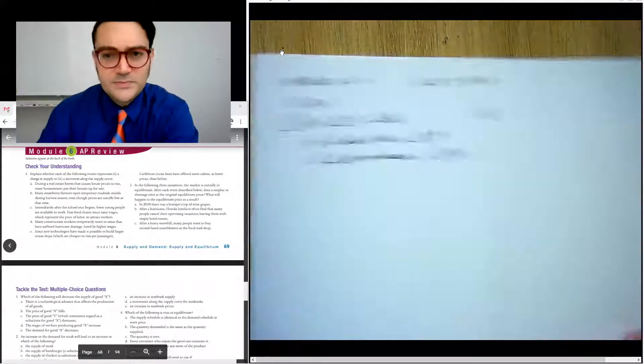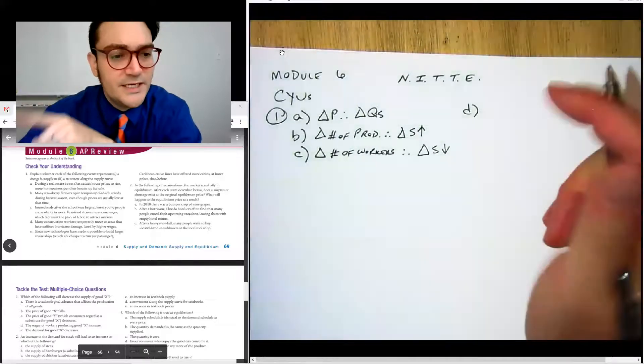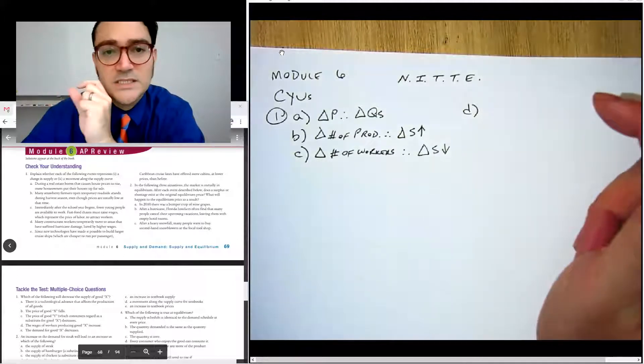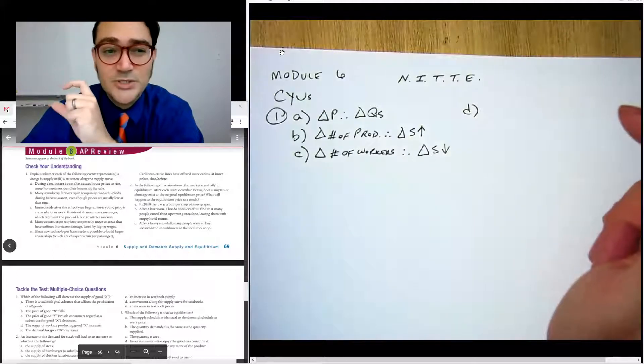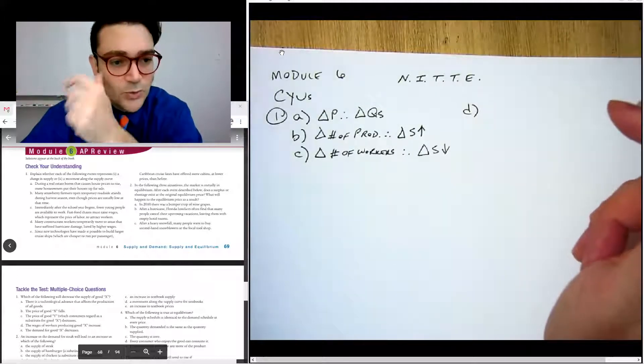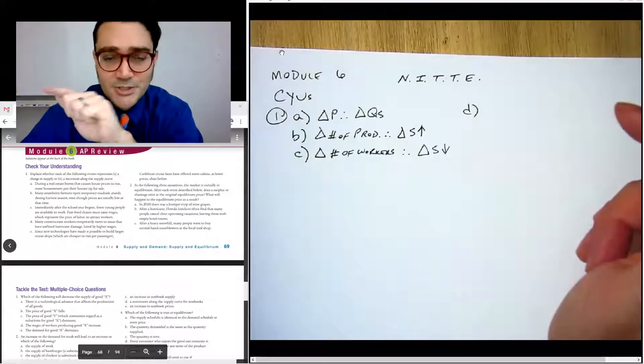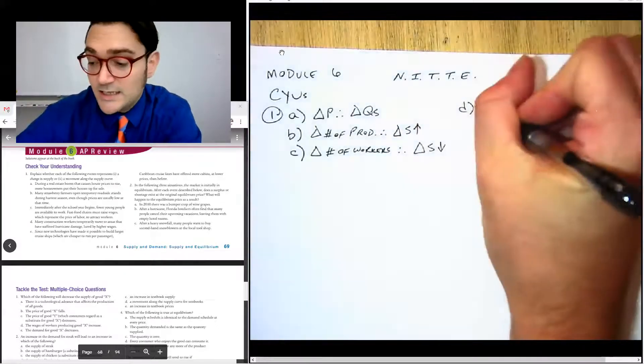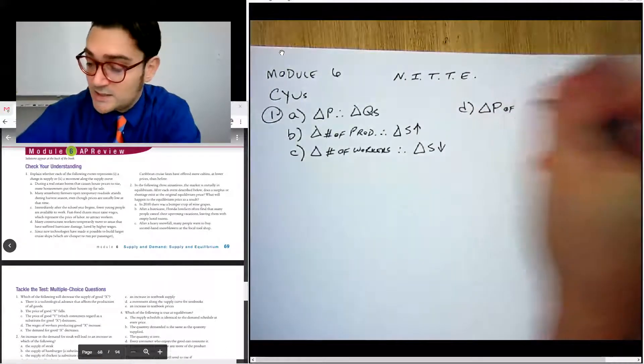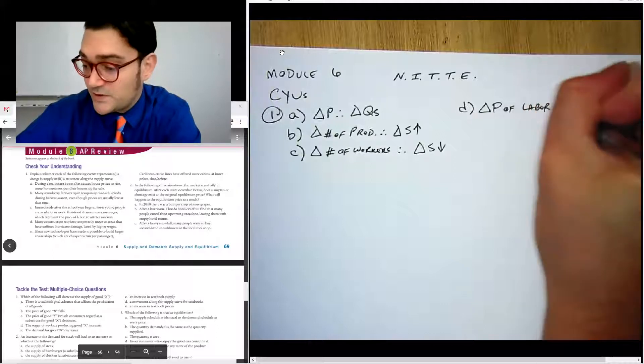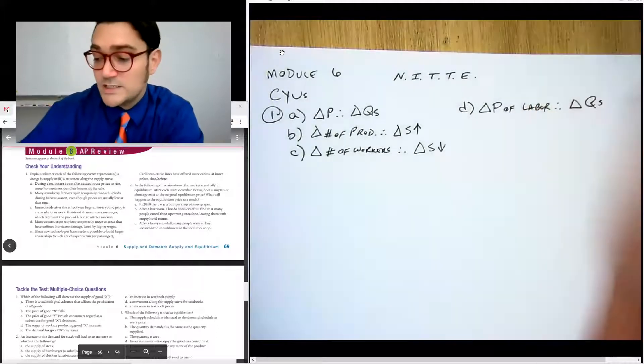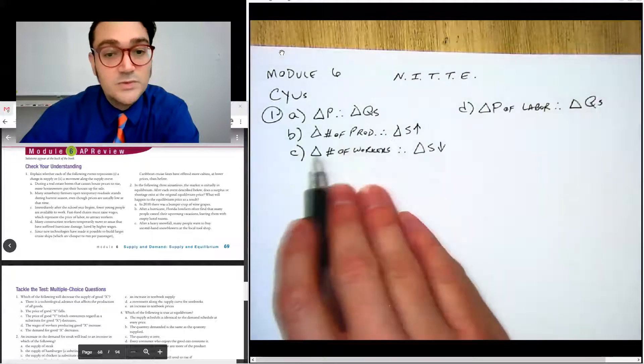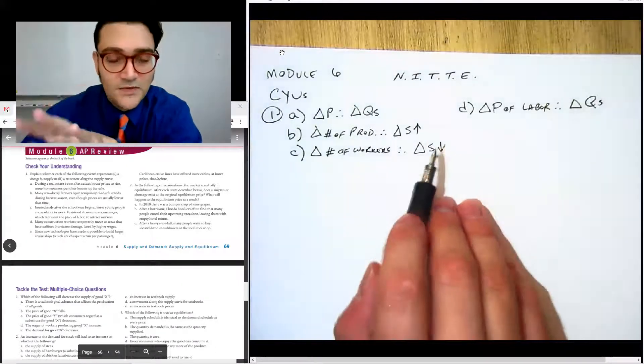For part D, that one says many construction workers temporarily moved to areas that have suffered hurricane damage lured by higher wages. So the precipitating event is there's this hurricane and then that causes higher wages. And the labor supply in this case isn't actually changing fundamentally. It's just lured by the wages themselves. So the price of labor is not going to shift the labor supply curve. It's going to cause a movement along it. So C and D are slightly different and they're just different enough. So the price of labor, they're just different enough that you can actually maybe see that this one's quantity supplied. And again, it's the change in the price of the worker that causes the change in the quantity of number of workers. For this one, it's the number of workers that's changing. And so regardless of what the wage was, there's fewer workers available.